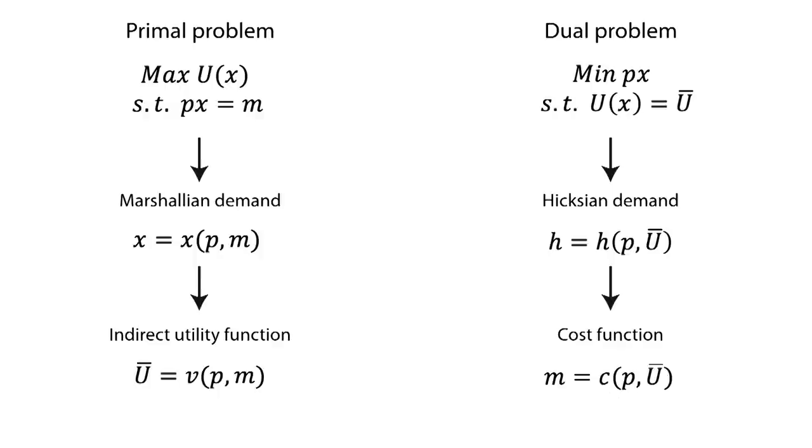All these equations have a few similarities and tricks that can be used in order to move from one to another. For instance, the Slutsky equation relates Marshallian demand functions to Hicksian demand functions. It can also be used to determine the type of goods being analyzed, and to determine the income and substitution effect.